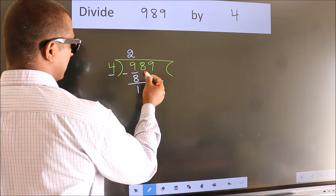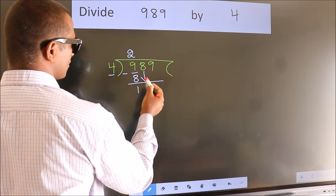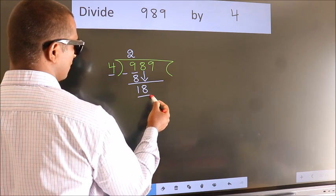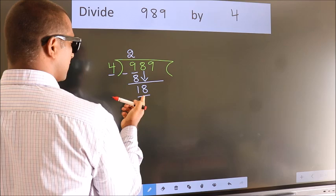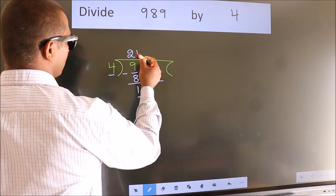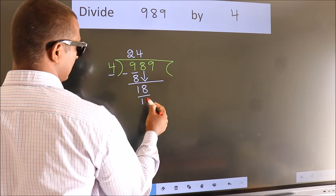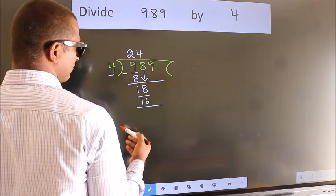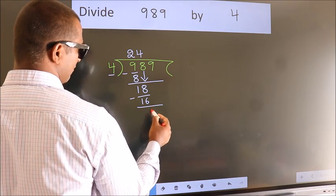After this, bring down the beside number. 8 down. So, 18. A number close to 18 in 4 table is 4 fours, 16. Now we subtract. We get 2.